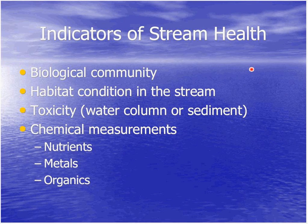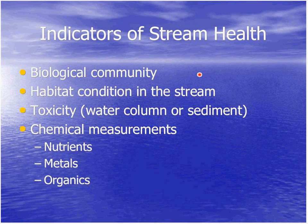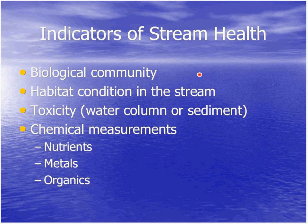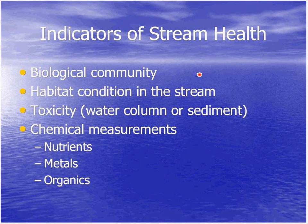One of the key things when doing monitoring is deciding what to monitor for — what kind of indicators to use. For stream health, we look at the biological community — the organisms that live in the stream — the habitat condition, including vegetation and bottom sediments, toxicity (usually water column toxicity in freshwater streams), and a variety of chemical measurements. The things we're often interested in chemically are nutrients, because you get algae problems in streams; metals, because of toxic effects; and certain organics.